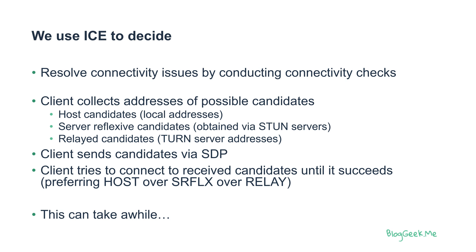ICE works as an algorithm by resolving different connectivity issues through connectivity checks. Each client in an ICE negotiation collects the addresses it has as possible candidates. It can take host candidates — the local IP addresses that might be private addresses. It will take server reflexive candidates, which is the public IP address as provided by a STUN server. And relay candidates, which are TURN server addresses that the TURN server provided. Once we have these addresses, we can send these candidates via SDP, trickle them if we want to, and then start connecting by trying these connections after receiving candidates from the other side as well.